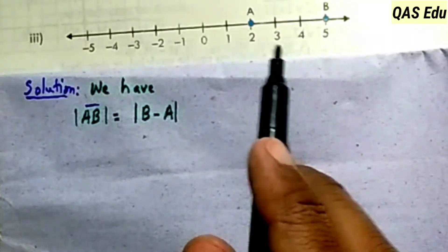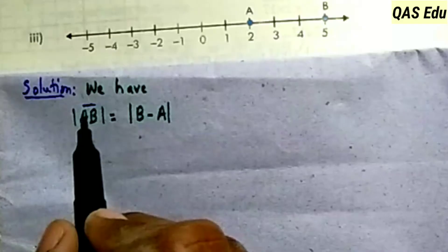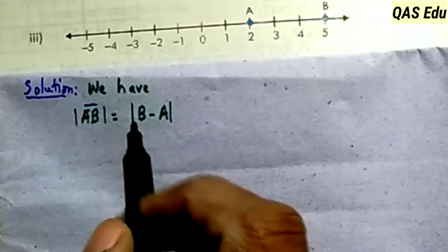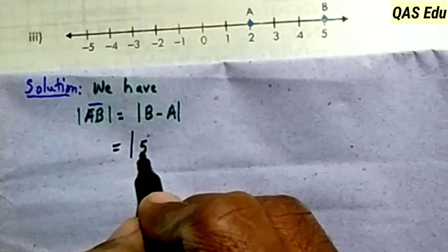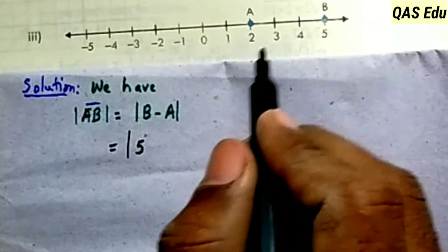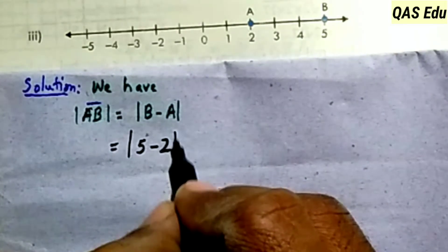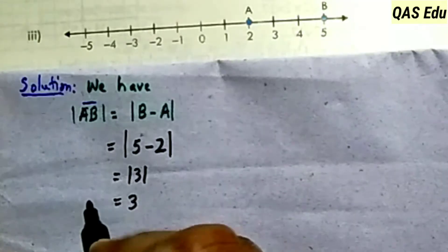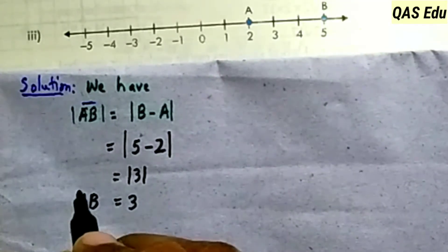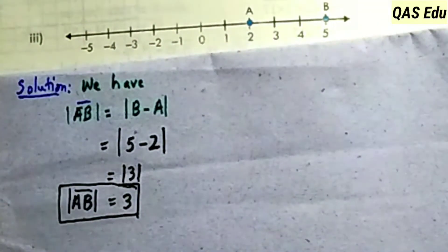The third part: given is the diagram, required is the length of AB. The solution is direct. AB length is the absolute value of AB, which is the absolute value of b minus a. B is 5 along the x-axis and A is 2. So |5 - 2| = 3. The AB length is 3 units, that is the distance — 3 units.